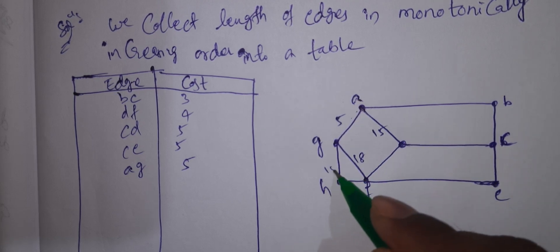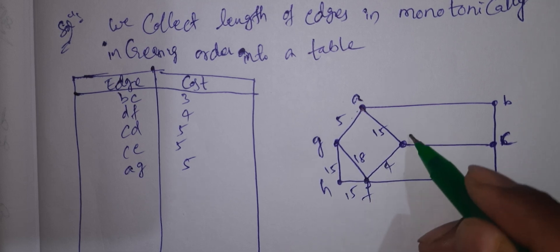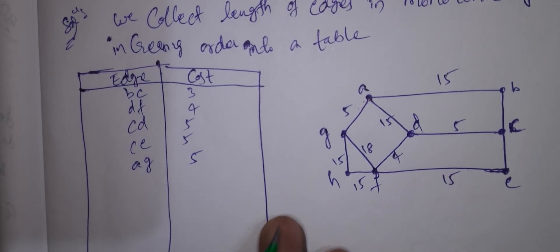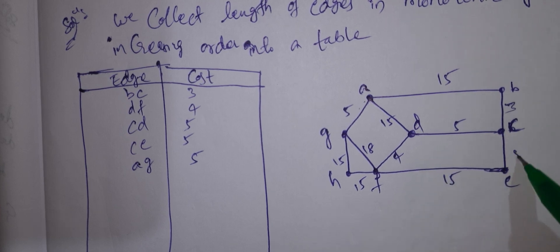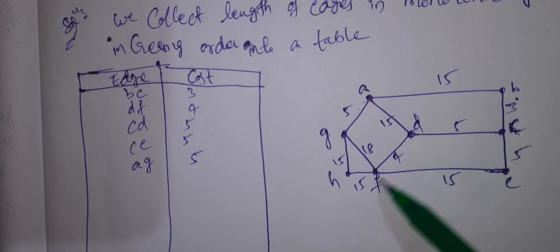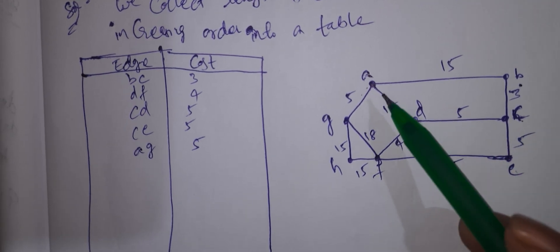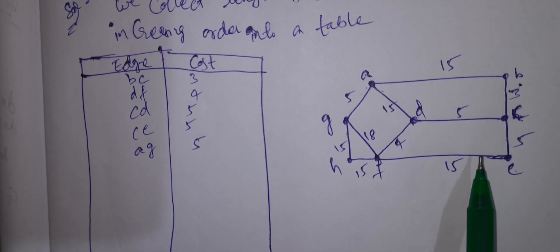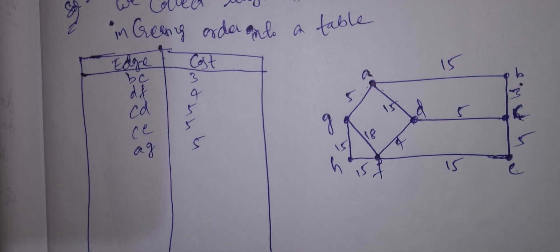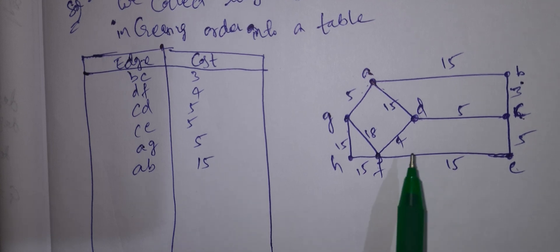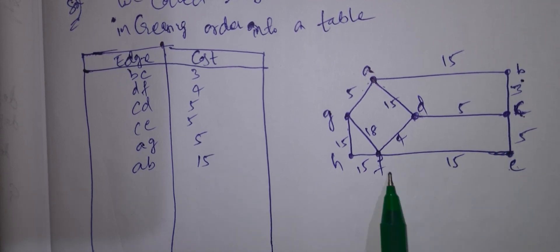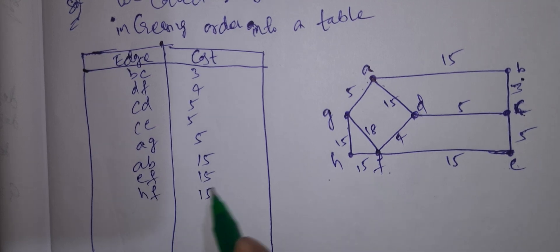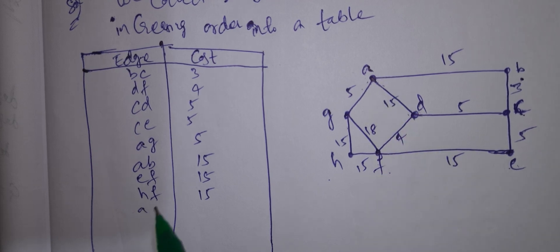Continuing the table in order: CE = 5, CD = 5, AD = 5. Next values are 15, 15, EF, HF = 15. Then AD entries follow. If you see GF, GF is equal to 8.